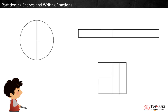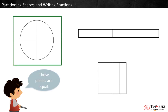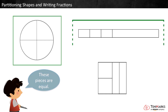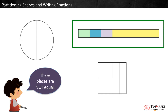Which of these shapes is broken into equal pieces? First, look at the circle. These pieces are equal — we can easily see that they are the same size. Now look at the rectangle. These pieces are not equal. We can easily see that the yellow piece is much larger than the others.